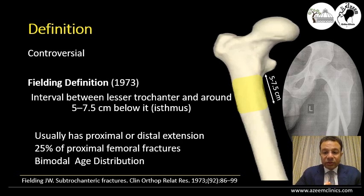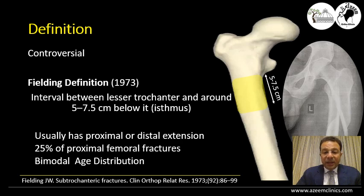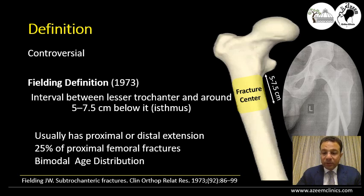If we look at the subtrochanteric fractures and think of why it is special — why it took a special name away from the diaphyseal fractures or the trochanteric fractures — we will find that the definition of subtrochanteric fractures in literature remains controversial. Since Fielding in 1973 was the first to describe this area as an anatomical peculiar area, which is the interval between the lesser trochanter and going distally for about 7.5 cm below it. So any fracture with a fracture center in this area will be termed a subtrochanteric fracture. Usually these fractures will have an upward or downward extension, but the fracture center is located in this area of the isthmus.